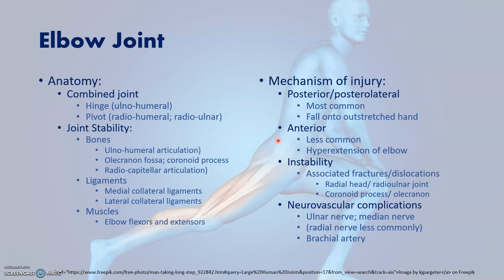Stability is further enhanced by the medial and collateral ligaments of the elbow. Dynamic stability is provided by the muscles that cross the elbow joint — the extensors and flexors. The most common type of dislocation seen in the elbow is the posterior or posterolateral dislocation, usually due to a fall onto the outstretched hand. Anterior dislocations are less common and may be due to hyperextension injuries. Most unstable elbow dislocations are due to associated fractures.